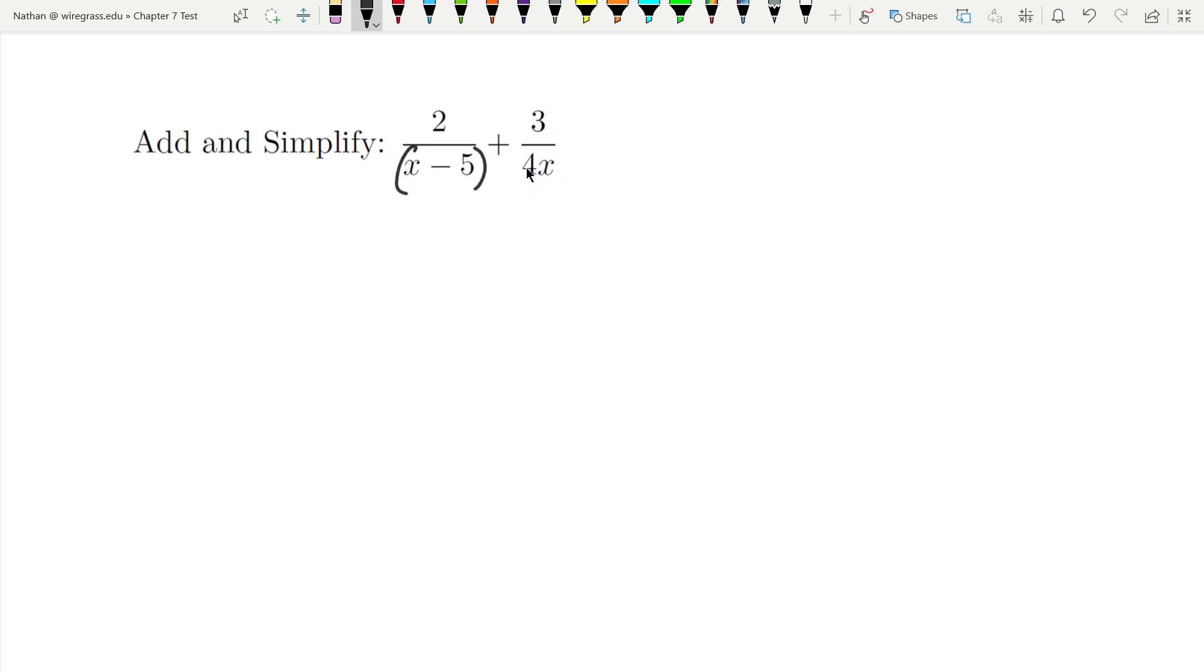I can't factor it at all, and 4x is also its own factor. So this thing needs a 4x on top and bottom, and this one needs an x minus 5 on top and bottom.